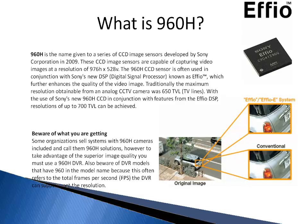You may be wondering, what is a 960H? 960H is the name given to a series of CCD image sensors developed by the Sony Corporation in 2009. These CCD image sensors are capable of capturing video images at a resolution of 976H by 528V. The 960H CCD sensor is often used in conjunction with Sony's new DSP — the digital signal processor known as FEO — which further enhances the quality of the video image.